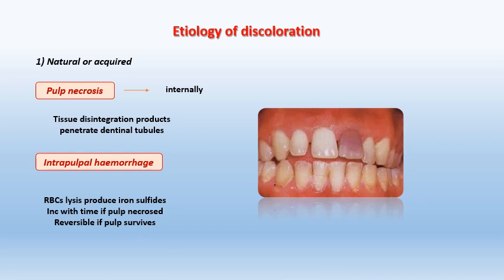Intrapulpal hemorrhage usually occurs as a result of trauma or impact injury to the tooth, causing disruption of blood vessels with release of RBCs, which produce iron sulfides. Iron sulfides are dark in color, increase over time, and penetrate the dentinal tubules causing staining of the surroundings. If the intrapulpal hemorrhage is massive it will lead to pulp necrosis, but if it is mild it can be reversible and the tooth can recover.